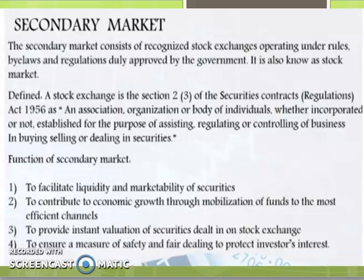These are the major portions covered here. Financial market is mainly classified into money market and capital market. Capital market is further classified into gilt-edged market and industrial securities market. Industrial securities market is further classified into primary market and secondary market. Thank you.